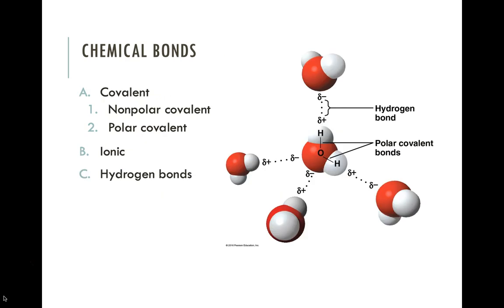Now that we've talked about reaction rates, let's talk about what's actually happening in a chemical reaction. There are a variety of things that could happen, and that relates to the type of chemical bond that is formed. There are four major types of bonds in biology. The first two are covalent bonds — nonpolar and polar covalent. Then we have an ionic bond and a hydrogen bond. All of these types of chemical bonds play an important role in our biological molecules.